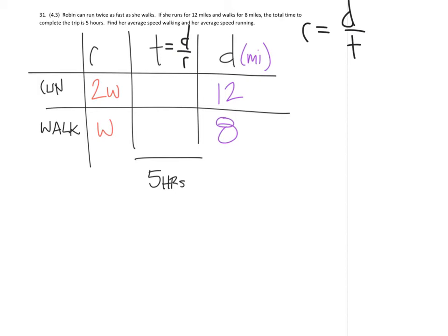So when we write these out, we simply place the values for each running and walking, and those times are the distance divided by the rate for both running and walking here.